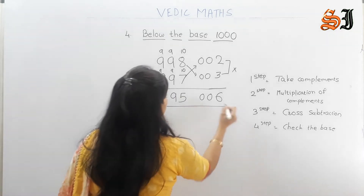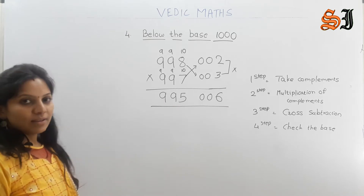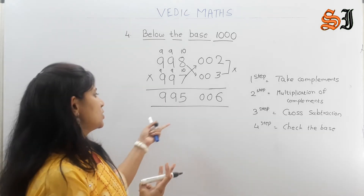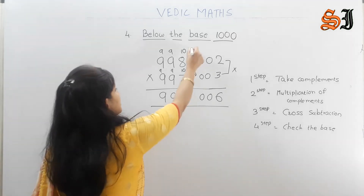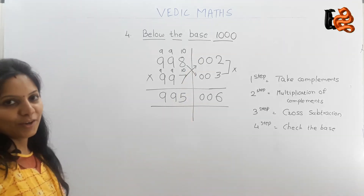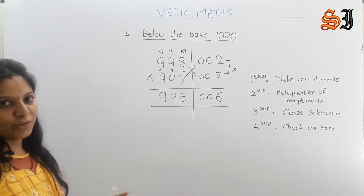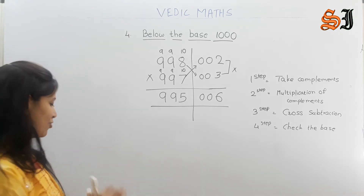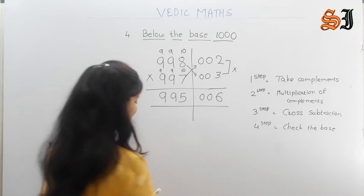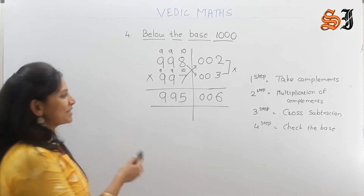This is the answer. Check the base: the base is 1000, which has 3 zeros. So swap to the right side with 3 numbers. These are the same. Very simple — we just follow and solve. Within a second, not a minute. Same step: follow and solve.